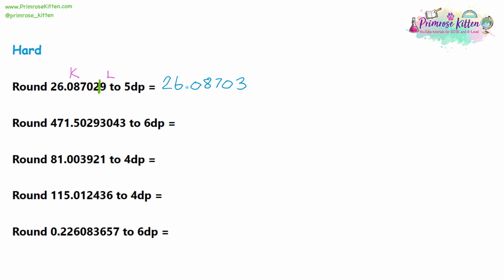Question two: rounding to six decimal places. Count out the first six numbers after the decimal point and rule off after the sixth. Before writing the answer — all the digits on the left — look at the first digit on the right we're losing, which is a four. That is not five or higher, so we are not rounding up. The answer is 471.502930.